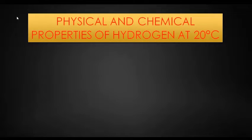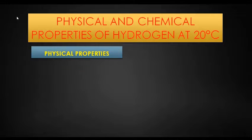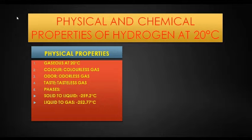Physical and chemical properties of hydrogen at 20°C. Physical properties: It is gaseous at 20°C. It is a colorless gas. It has no smell. It is a tasteless gas. It has 2 phases. It changes from solid to liquid at -259.2°C and from liquid to gas at -252.77°C.